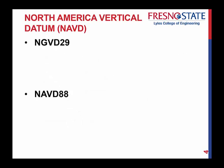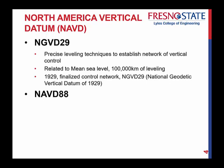As we talk about vertical datums, there are actually two. NGVD 29 — the National Geodetic Vertical Datum of 1929 — is where it started. Back then, they used precise leveling techniques to establish vertical control across the United States, all referenced back to mean sea level. That involved measuring about 100,000 kilometers of leveling, which was a lot to do in the early 1900s. Everything was finalized in 1929.